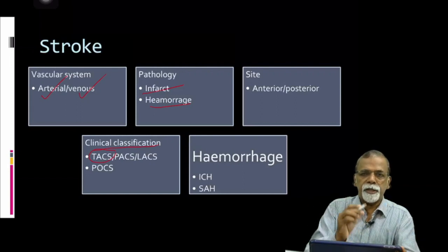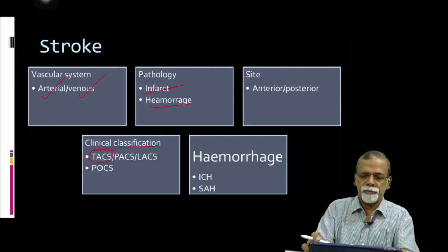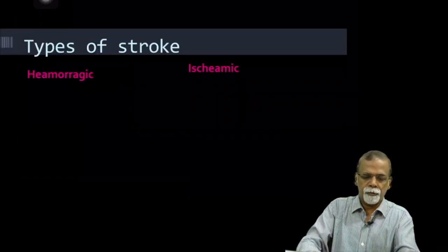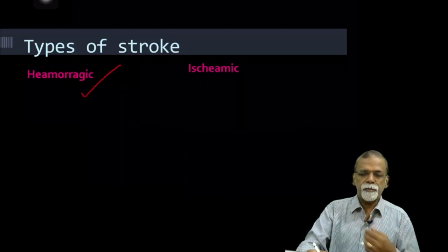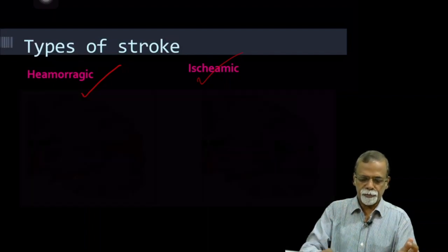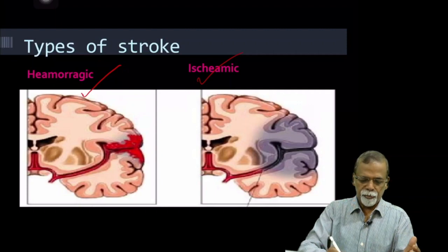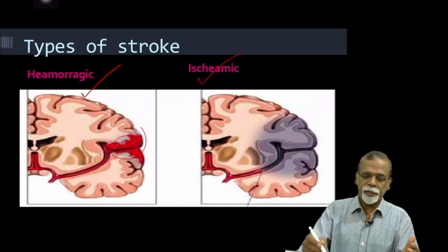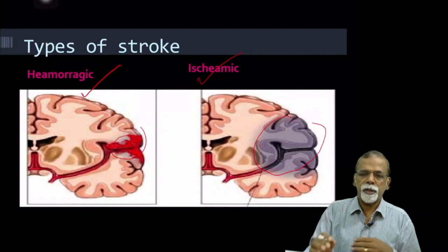Earlier we divided stroke into infarct and hemorrhage. Hemorrhage can be intracerebral — that is intracranial hemorrhage within the brain parenchyma — or in the subarachnoid space. As already mentioned, we have divided stroke into hemorrhagic stroke and ischemic stroke. That is the fundamental classification. On one side there is hemorrhage and bleeding, and on the other side there is ischemia. So strokes can basically be ischemic stroke or hemorrhagic stroke.